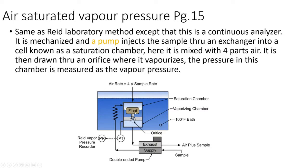The online version of the air-saturated vapor pressure test is the exact same process as the Reid laboratory method, except it's a continuous analyzer. A pump injects the sample through an exchanger into a saturation chamber sitting in a water bath at 100°F, where it is mixed with four parts of air. The sample is then drawn through an orifice where it vaporizes, and we measure the pressure off the side of the chamber through a pressure recorder. Key things to remember: it has a pump, an orifice, it's in a bath, and it uses a four-to-one air-to-sample ratio.